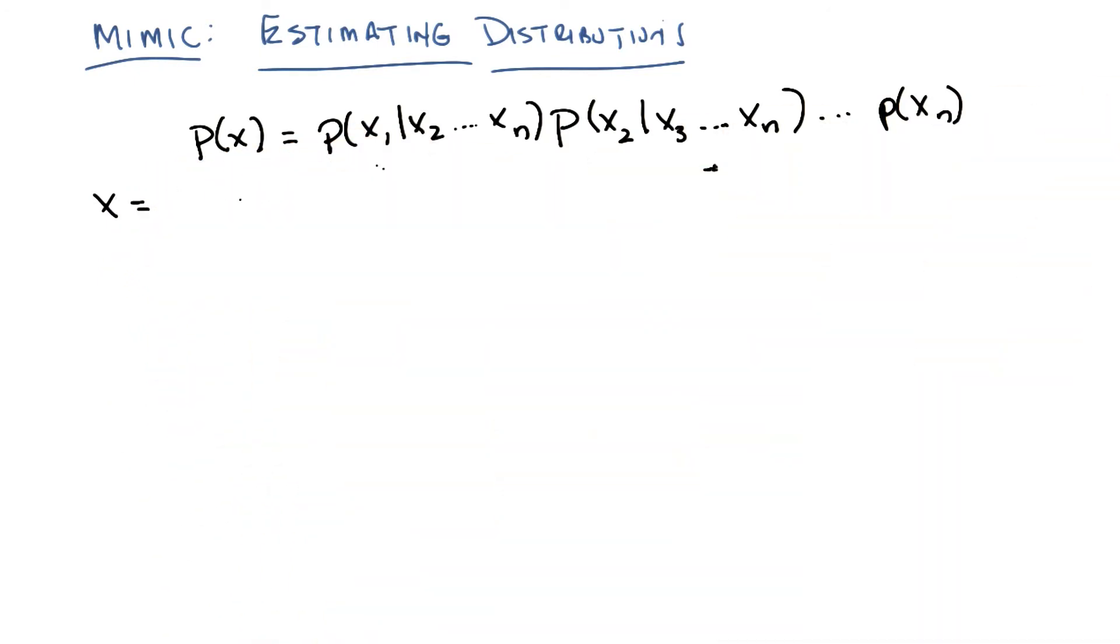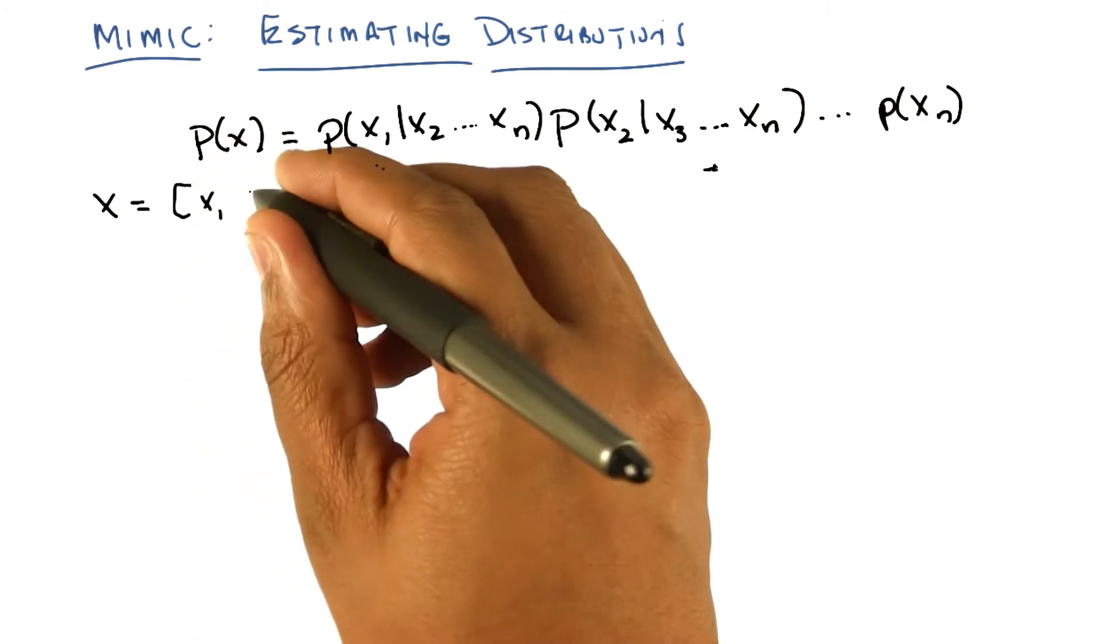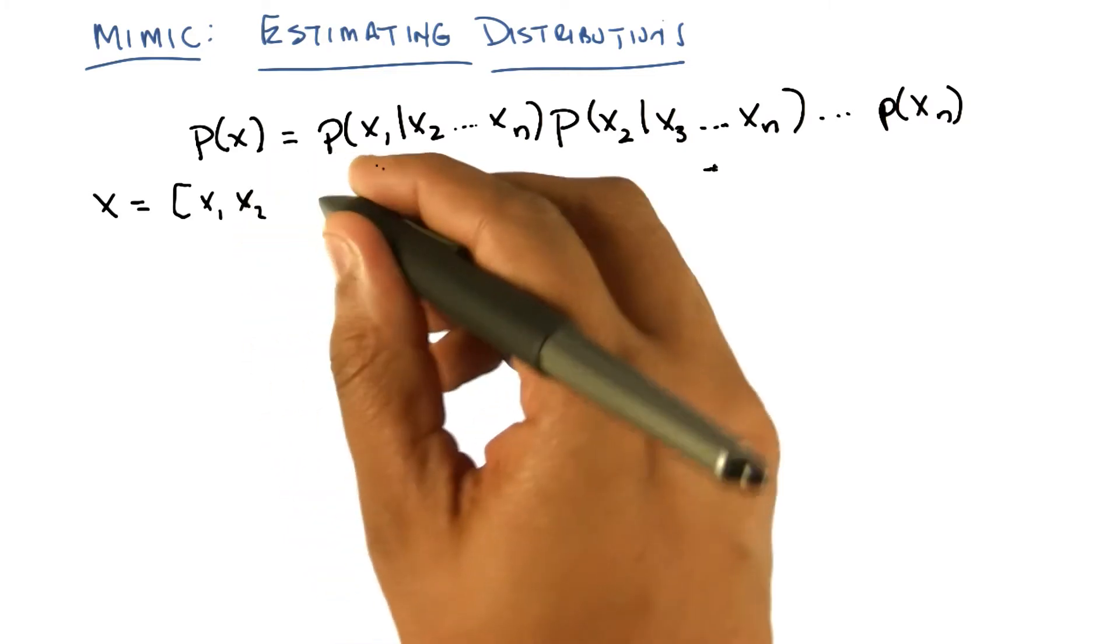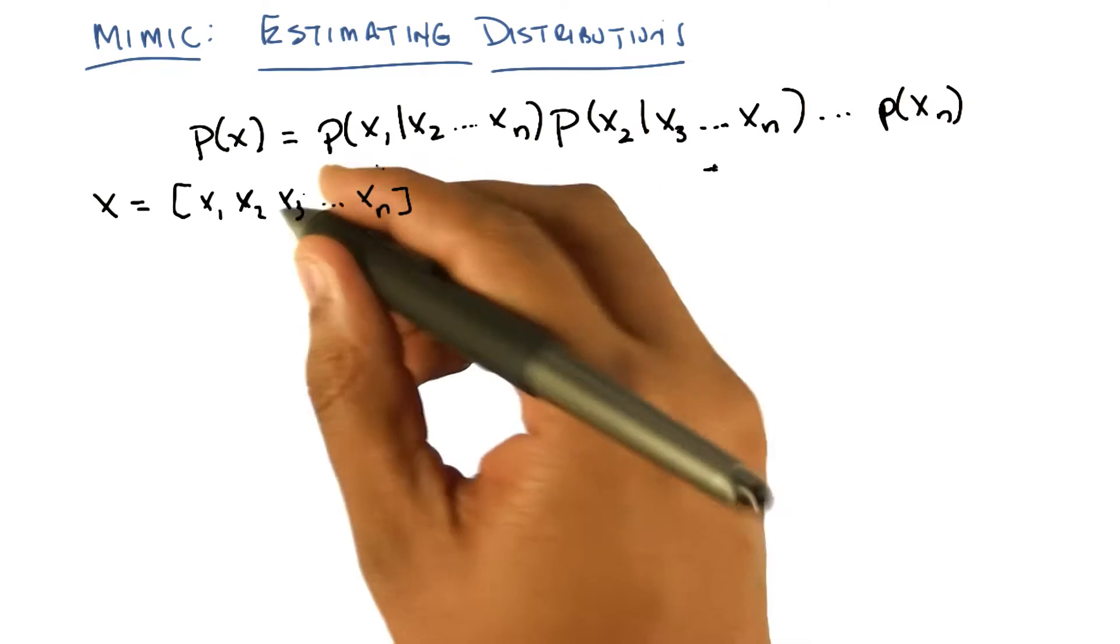So there's, let's just say there's n of these features. And so really x is a vector, there's feature one, there's feature two, there's feature three, dot dot dot, all the way up to feature n.